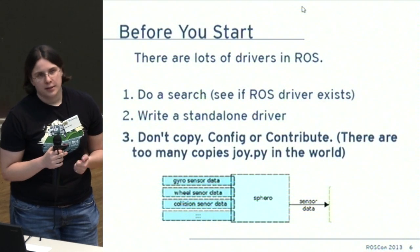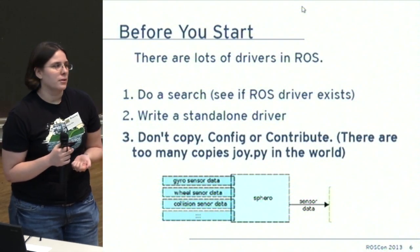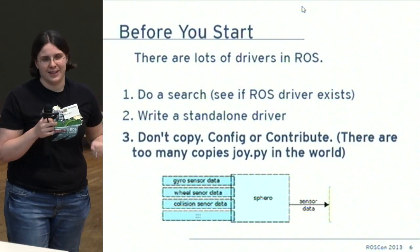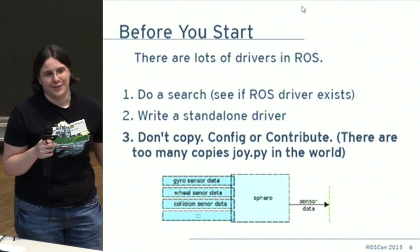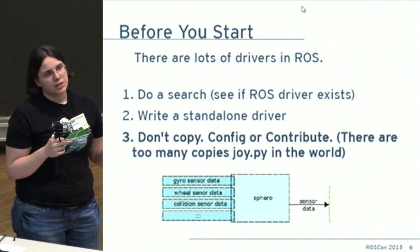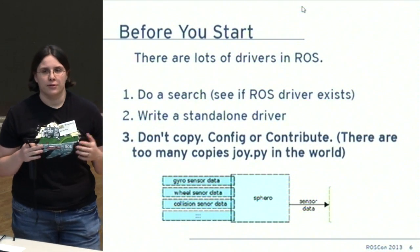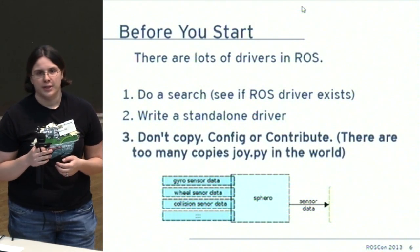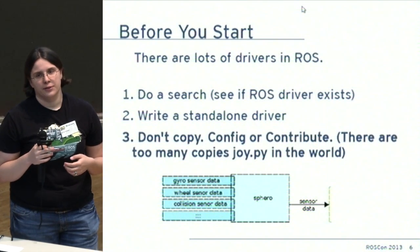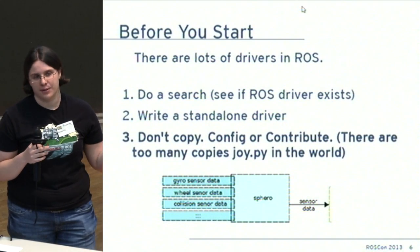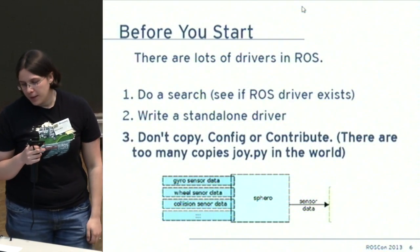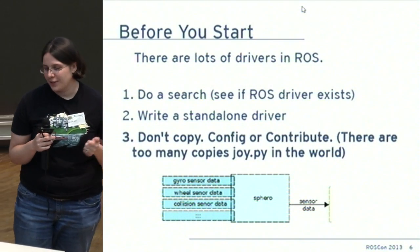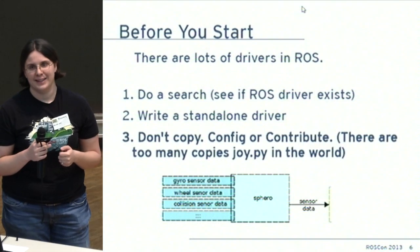Second, write a standalone driver. A lot of people jump into ROS and want to ROS everything up right away, but you actually want to create barriers between your different ROS nodes so that your dependency tree doesn't become monstrous. You can end up with a dependency tree where you have to download all of ROS to do anything with your robot, even if it's something like a Sphero.